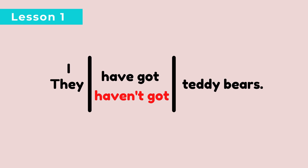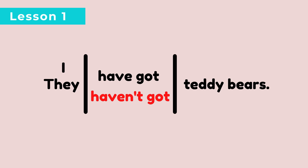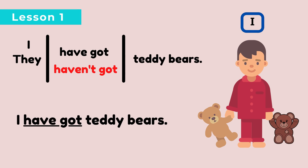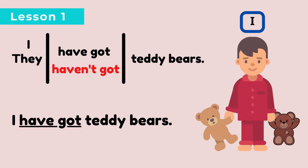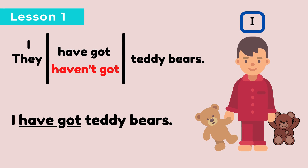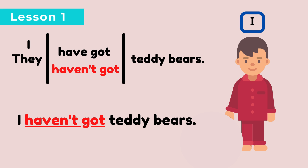Let's take a look at have got and haven't got first. For I and they, we must use have got or haven't got. For example: I have got teddy bears — saya mempunyai patung beruang. But now, as you see in the picture, there are no teddy bears, so I haven't got teddy bears.